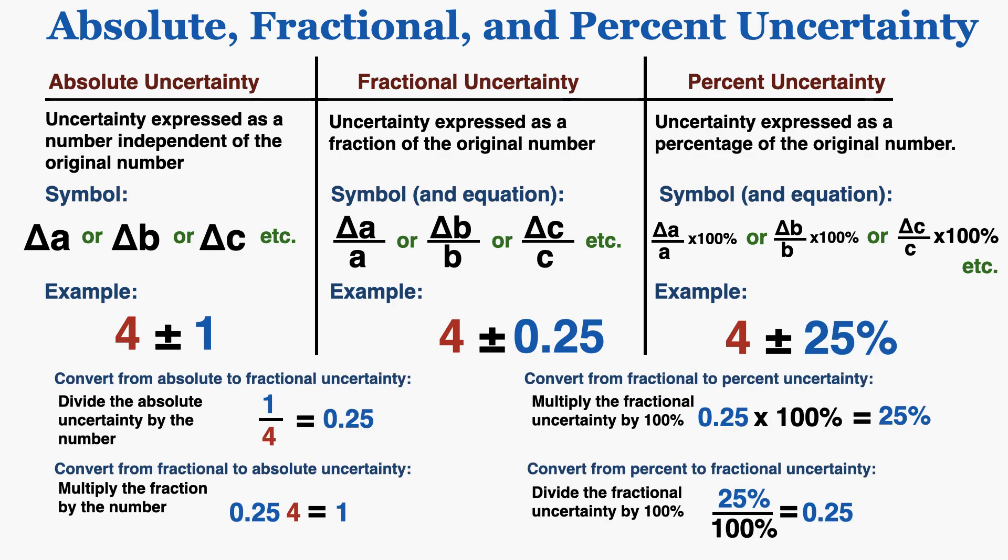Here are the rules for converting between each type of uncertainty. Going from absolute to fractional, you divide the absolute uncertainty by the number. From fractional to percent uncertainty, you multiply the fractional uncertainty by 100%. In the other direction, from percent to fractional, you divide by 100%. And from fractional to absolute uncertainty, you multiply the fraction by the number.